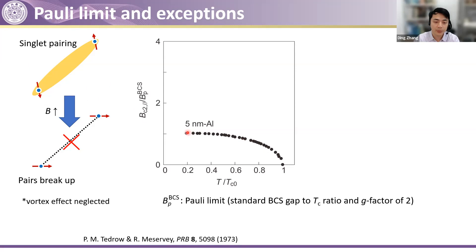This can be nicely seen in a system where people quite some time ago studied the ultra-thin aluminum superconductor. Here I plot the upper critical field in-plane parallel to the aluminum thin film, normalized by the so-called Pauli limit — the magnetic field where spins should be polarized considering the standard BCS theory and g-factor of 2. By lowering the temperature, the upper critical field goes up, but it never exceeds the Pauli limit. It follows quite nicely this Pauli paramagnetic effect.